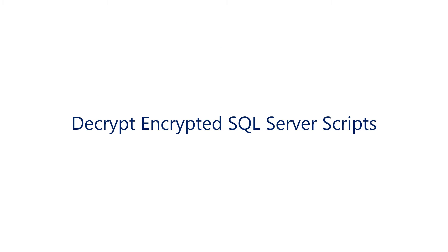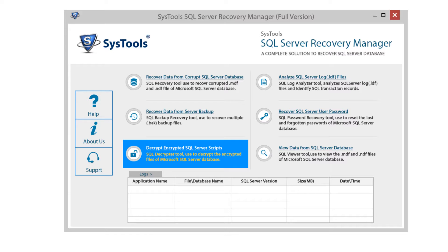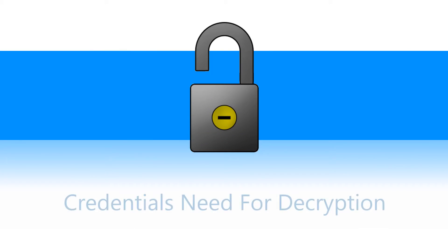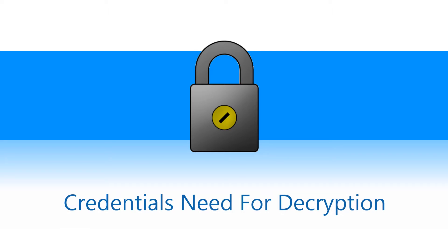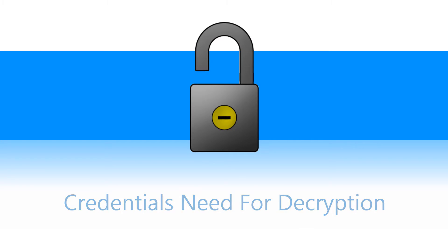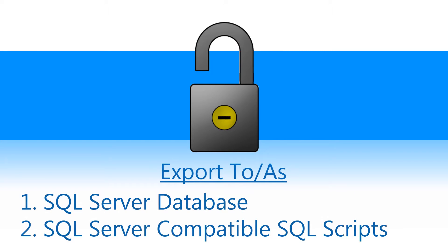Module 5: Decrypt encrypted SQL server scripts. This module removes encryption from an SQL server database. To remove the encryption, you need to fill in the server name, login mode, username, and password, then select the database to decrypt. After previewing the decrypted database, you can export it into SQL server or server-compatible SQL scripts.